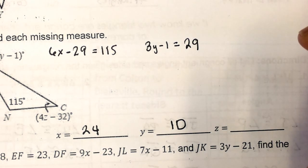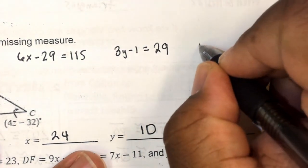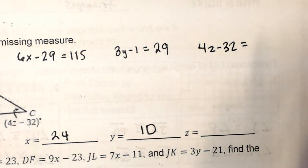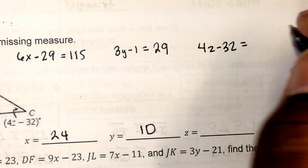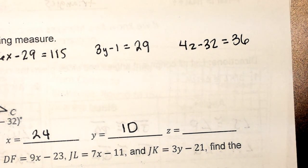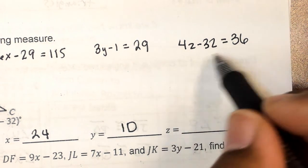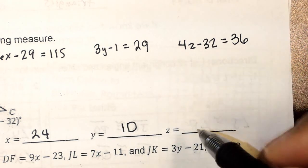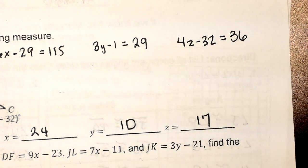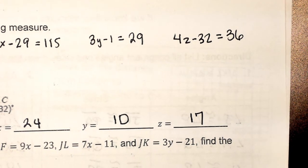The last one is solving for Z. On angle C I've got 4z minus 32. Angle C is congruent to angle P, which is 36 degrees. So 4z minus 32 equals 36. When you solve that two-step equation — add 32, then divide by 4 — you get z equals 17. If you can't do that two-step equation, then we're in trouble.